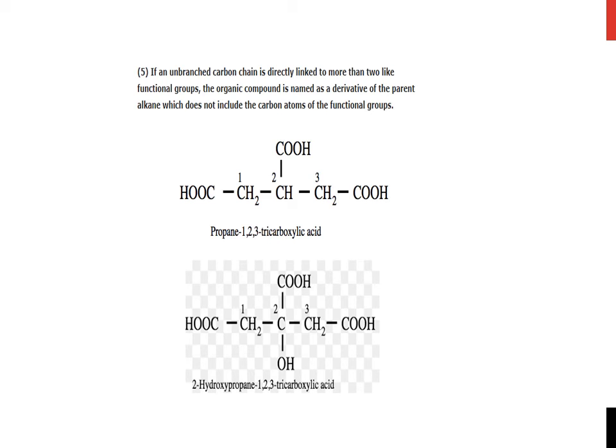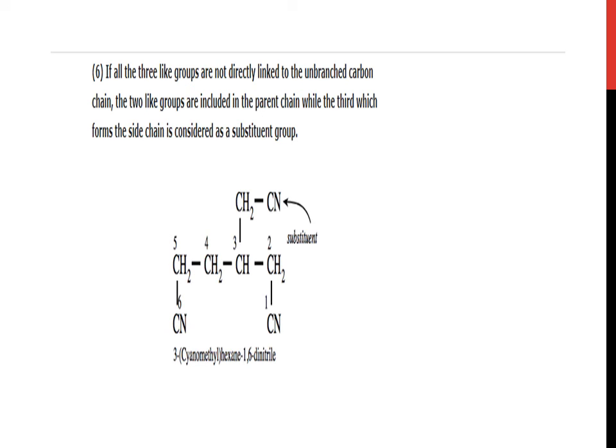One more example. When along with the three carboxylic groups, you are also provided with that alcoholic group OH, then what to do? Now, principal functional group will be carboxylic, but OH will be substituent and will be written as hydroxy. Its IUPAC name will be 2-hydroxypropane-1,2,3-tricarboxylic acid.